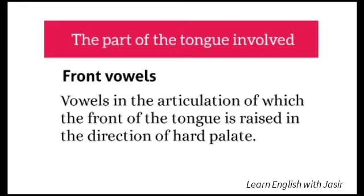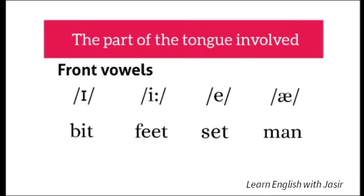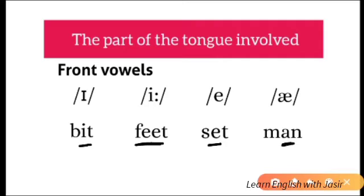This is how front vowels are articulated — the front of the tongue is raised in the direction of the hard palate. The examples of front vowels in English are: I as in 'bit', E as in 'feet', A as in 'set', and A as in 'man'. These are the four front vowels in English.